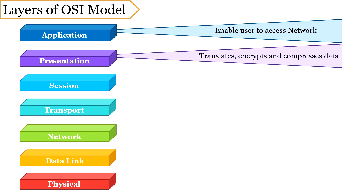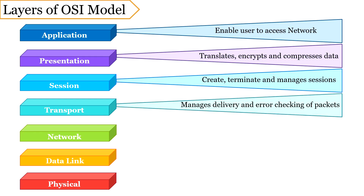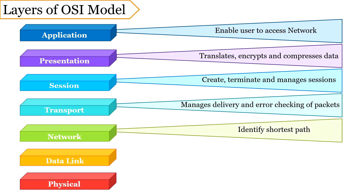Next is the session layer — it establishes, maintains, and synchronizes the session of interaction between the communicating systems. Next is the transport layer, which is responsible for process-to-process delivery of the entire message. Next is the network layer, that is responsible for source-to-destination delivery of packets.